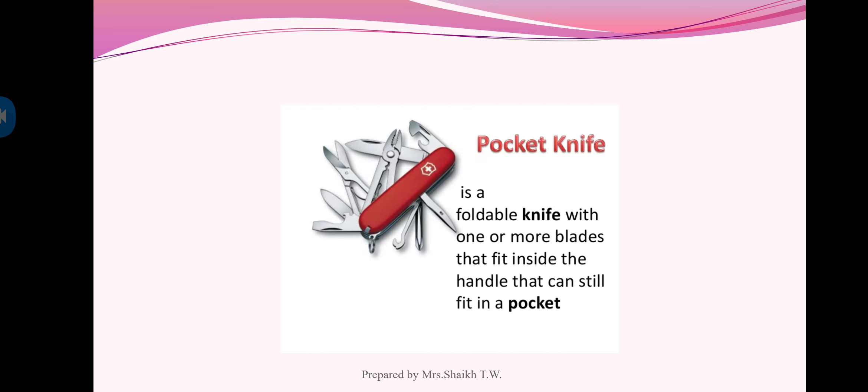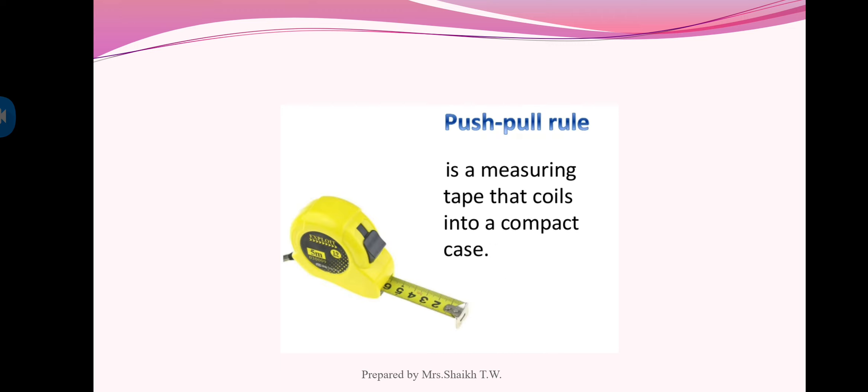Next one is pocket knife. The figure shows the pocket knife is a foldable knife with one or more blades that fit inside the handle that can still fit in a pocket. Next one is push pull ruler. It is a measuring tape that coils into compact case.